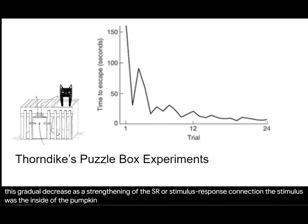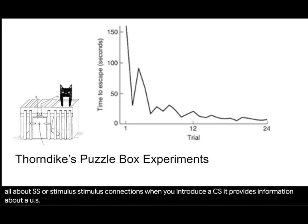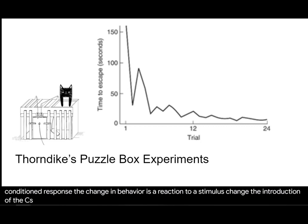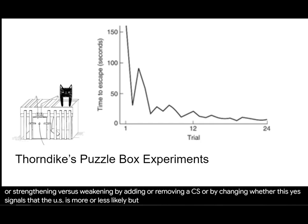The stimulus was the inside of the puzzle box; the response was whatever opened the box. Recall that classical conditioning in chapters three and four is all about SS, or stimulus-stimulus, connections. When you introduce a CS, it provides information about a US — for example, that the US is about to occur — and it elicits a corresponding CR, or conditioned response. The change in behavior is a reaction to a stimulus change: the introduction of the CS. You can get different kinds of classical conditioning, like excitatory versus inhibitory, or strengthening versus weakening, by adding or removing a CS, or by changing whether the CS signals that the US is more or less likely. But regardless, classical conditioning requires some kind of stimulus change.